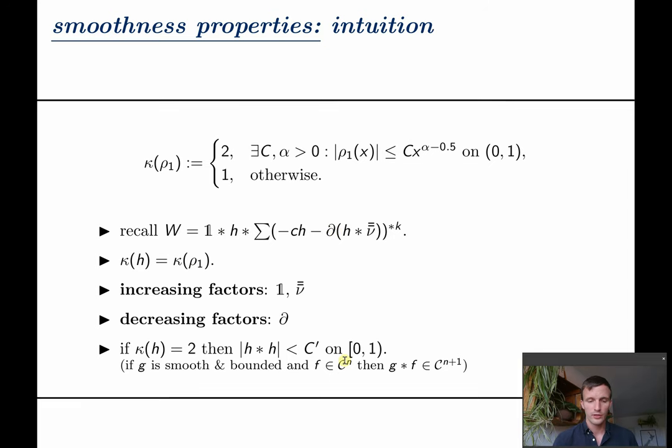then h convoluted with h is bounded which on the one hand appears here and on the other hand lets us add one final degree. Of course the rigorous proof for that takes a while but I hope the intuition behind it becomes somewhat clear.